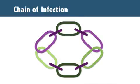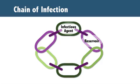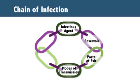To fully understand how to control the spread of germs, it is important to know how infections are spread from one person to another through the chain of infection. There are six links in the chain of infection: the infectious agent or germ, a reservoir where the germ normally lives, a portal of exit from the infected person, a means of transmission between persons, a portal of entry in a susceptible person, and a susceptible person.